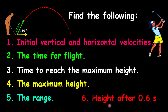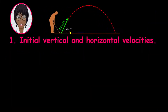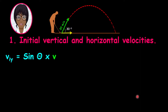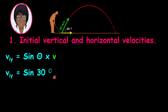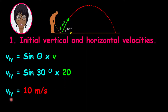Now let us look at the first question. Please pause and calculate along with me or pause the video and test yourself first. Remember that the vertical initial velocity, or the y component, equals the sine of the angle multiplied by v. Therefore, the vertical initial velocity equals sine 30 degrees multiplied by 20, which gives us 10 meters per second.